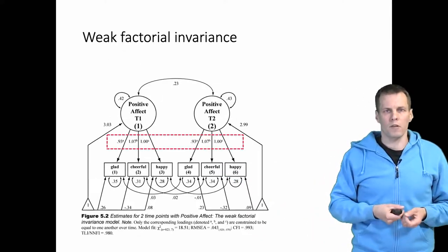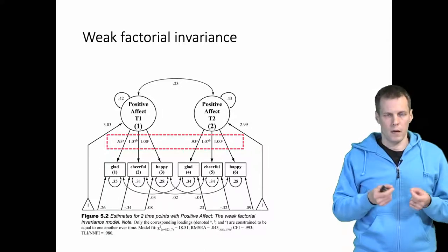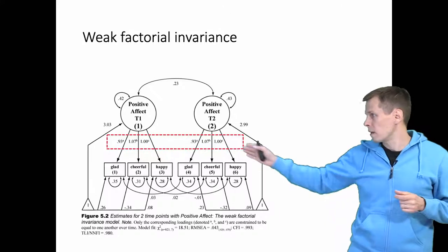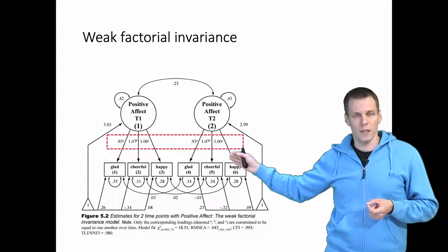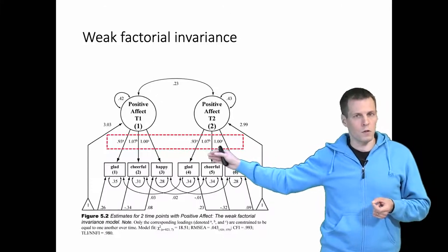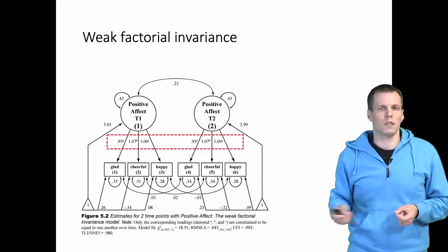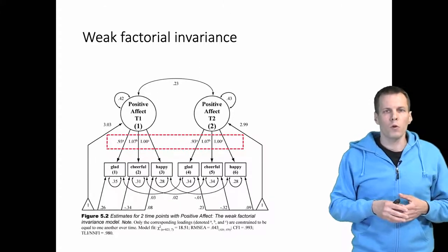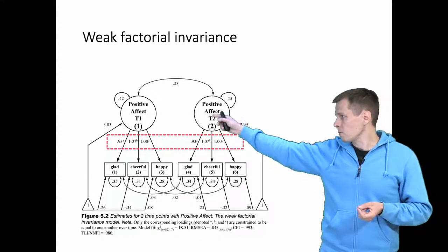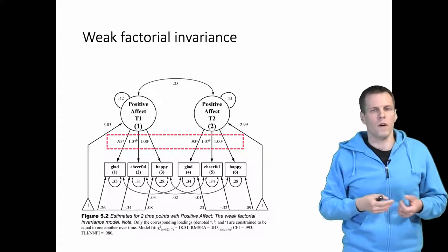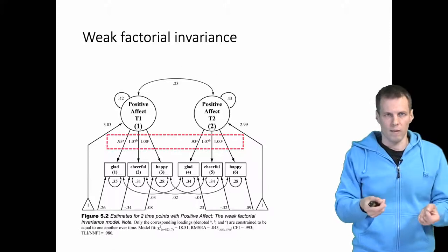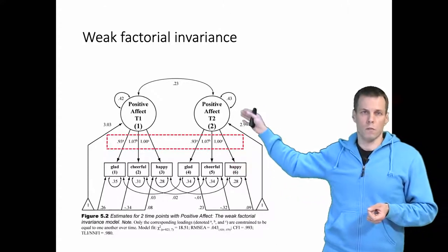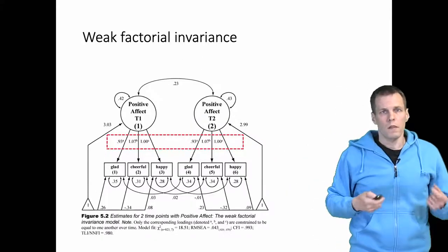For weak factorial invariance, we examine whether the factor loadings can be constrained to be the same across occasions, which establishes the scale for the variance of the latent variables. The first loading is constrained equal to the first loading at the other time point, the second to the second, and the third to the third. If the factor loadings were widely different, we could not conclude that differences in variances or covariances are valid estimates of covariance between the traits, because the measures might simply work differently and be less related to the concept measured at one time point.